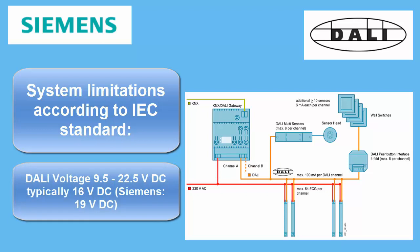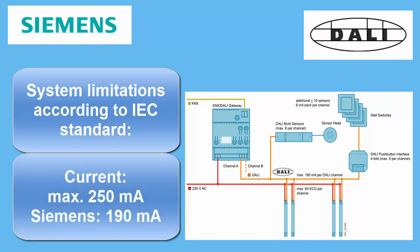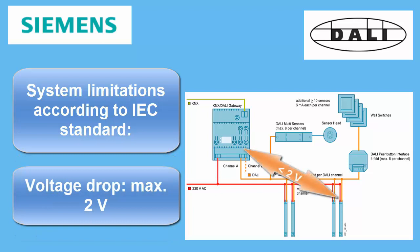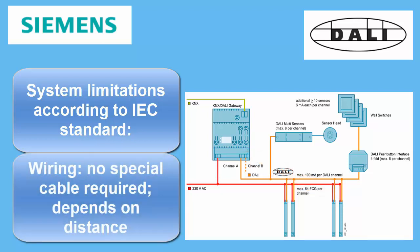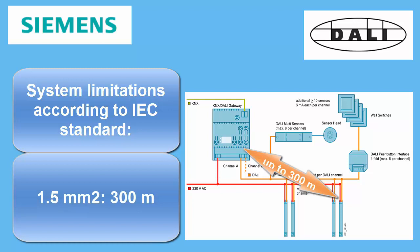The system limitations of wiring and addressing are as follows. The DALI voltage ranges between 9.5 and 22.5 volts DC, typically at 16 volts. The maximum current on a DALI line may be limited to 250 mA. The voltage drop between central controller and the ballasts may not exceed 2 volts. The maximum range of 300 m can be obtained using 1.5 mm² cable cross section; with 0.8 mm² cable, a maximum distance of 150 m can be reached.